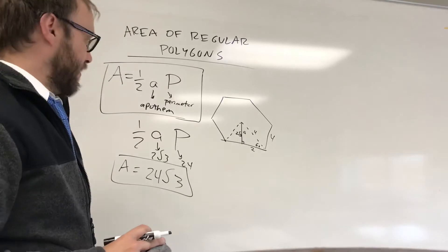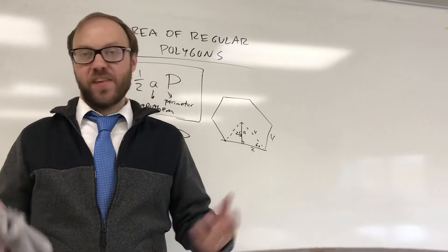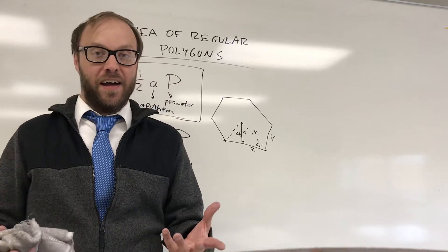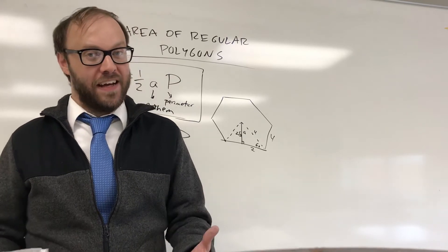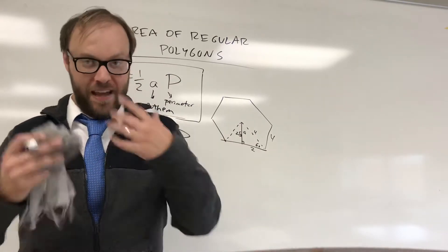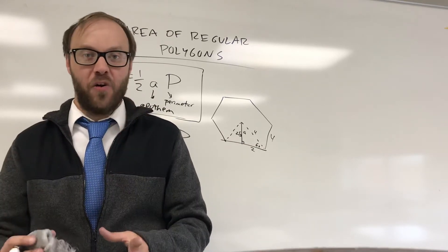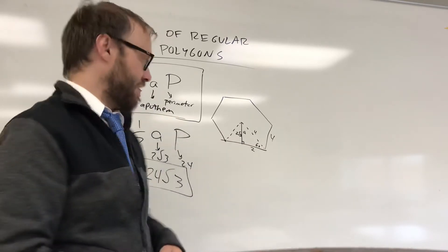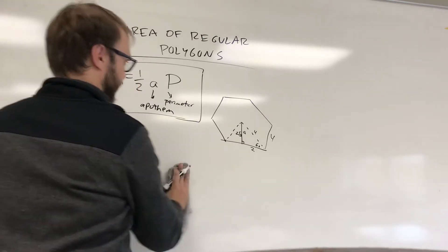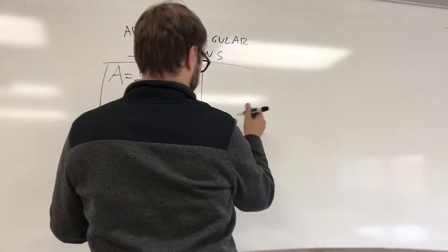It's not the only way to do these problems, but I'm going to use that formula pretty often. If you get really lucky, they'll give you a side length and the apothem, and you can crank it out very quickly. Most of the time, though, you're actually going to have to find the apothem. So let's look at two additional examples and make sure we're comfortable with everything. Let's try an octagon.